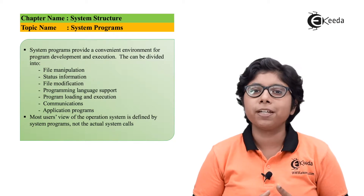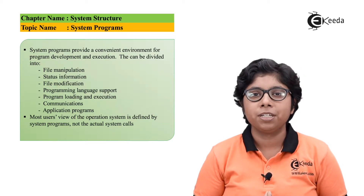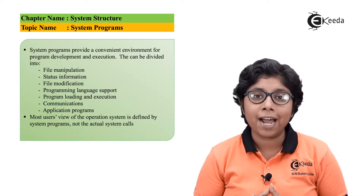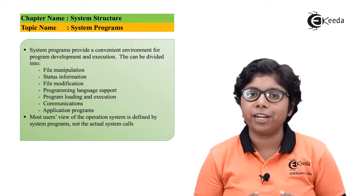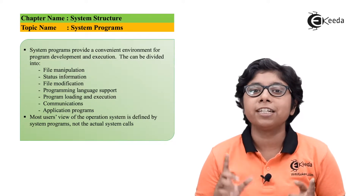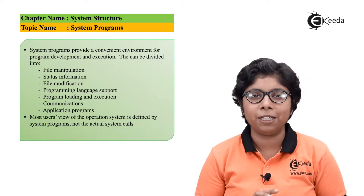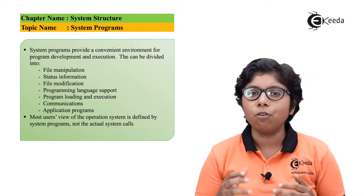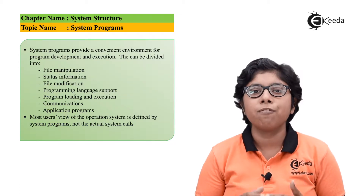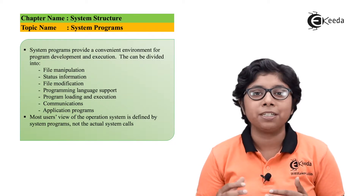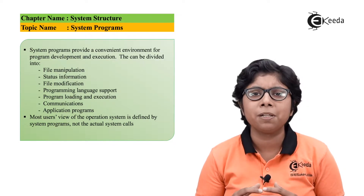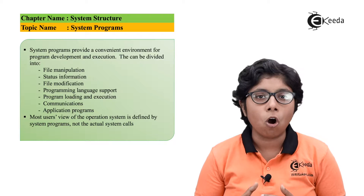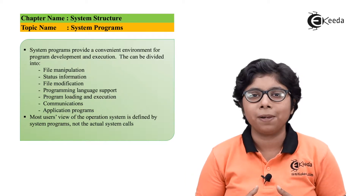A modern aspect of an operating system is a system program. If you look at the computer hierarchy, we can see at the base level, or level 0, there is hardware, after that is an operating system, after that are system programs, and finally there are application programs. The system programs provide an environment for program development and better execution. They can be the interface for small and simple user system calls, or some others can be more complex.